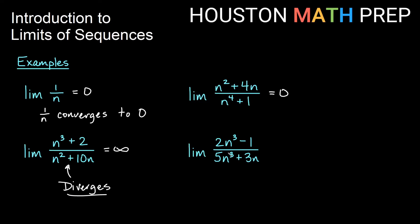For the last one on the page, the limit of 2n cubed minus 1 over 5n cubed plus 3n: the highest power term in each polynomial is the strongest term as n gets really big. The 2n cubed is the most powerful term on top, and 5n cubed is the most powerful term on the bottom. When we have polynomials of the same degree top and bottom, we find the limit by comparing the lead coefficients. So the limit here is 2/5, and we say this sequence converges to 2/5.